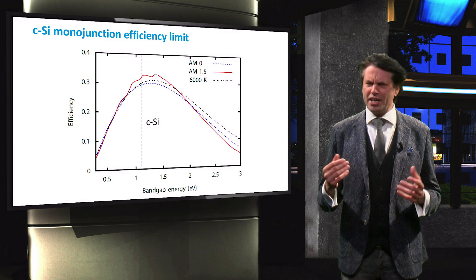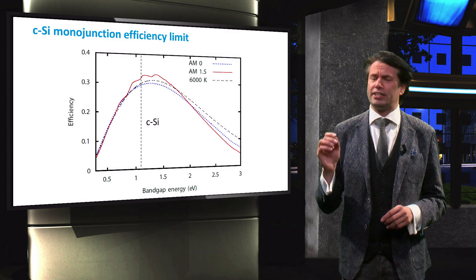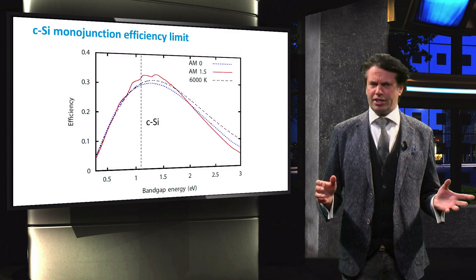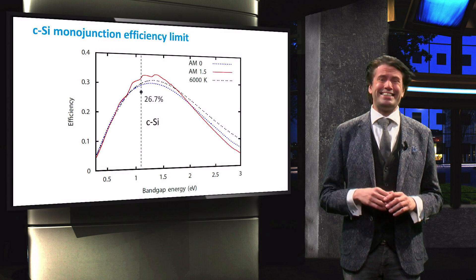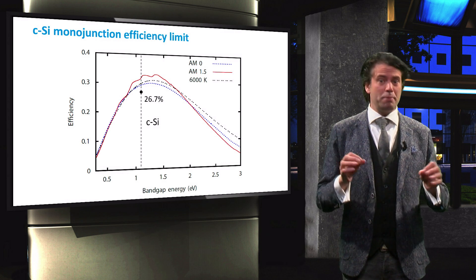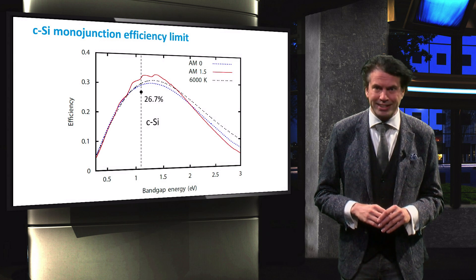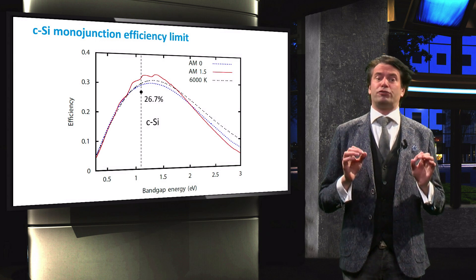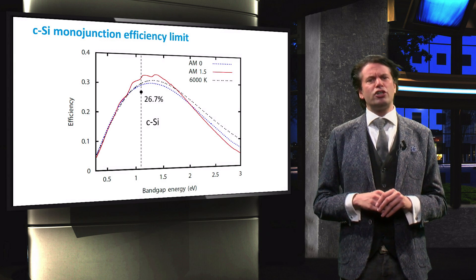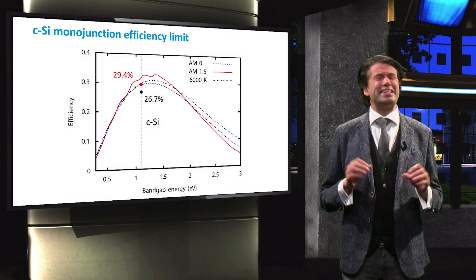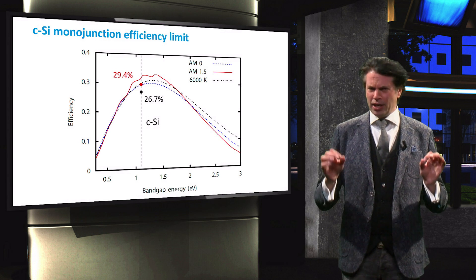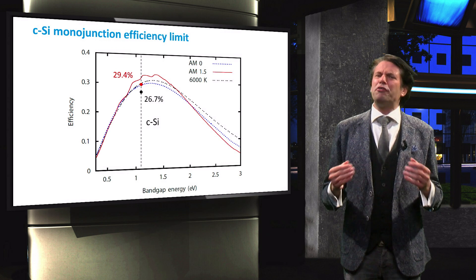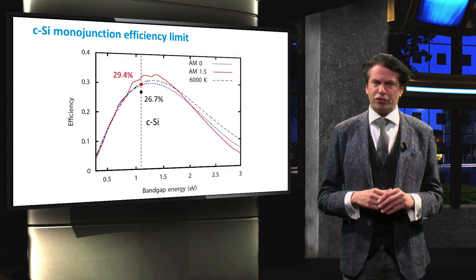We will start with a quick recap of the state-of-the-art crystalline silicon technology. Cell efficiencies up to 26.7% have already been reported for monocrystalline silicon cells. The maximum theoretical achievable efficiency for a single-junction crystalline silicon cell is 29.4%. It is evident that we are nearing the maximum practical efficiency for these solar cells.